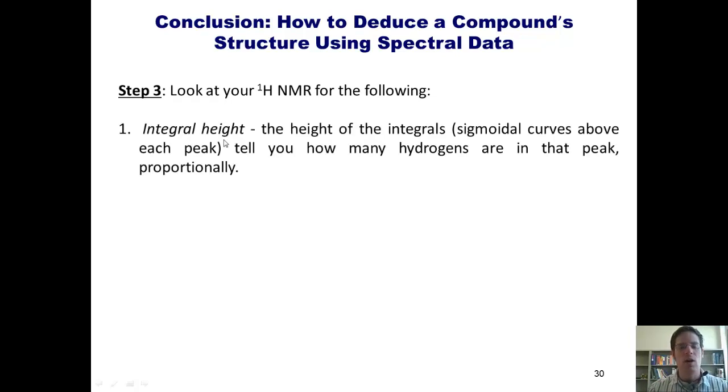First, look at your hydrogen NMR's integral height. Measure each of the sigmoidal curves above the peaks and determine their ratio. One to two to two, or two to three to three, or four to two to two, or four to two to three, or whatever that happens to be.